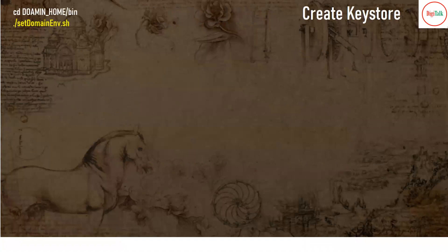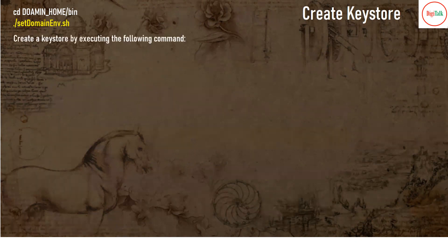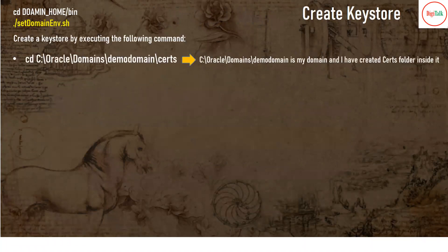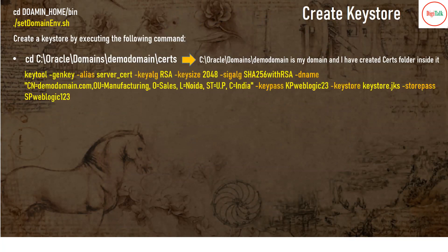The first step is how to create a keystore. Go to your bin directory inside your domain and run setDomainEnv.sh to set your environment variables. Then create a directory to store all your certificates — in this example, a directory named 'certs' inside the domain. All certificates will be generated and stored inside this directory. This is the command used to generate your keystore.